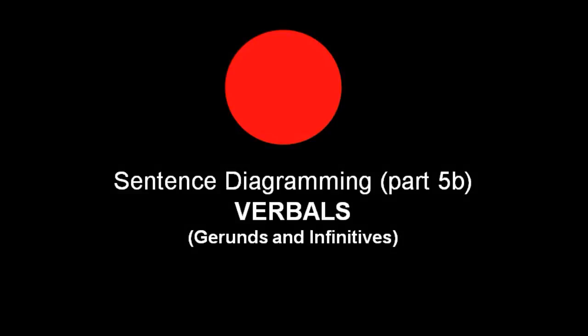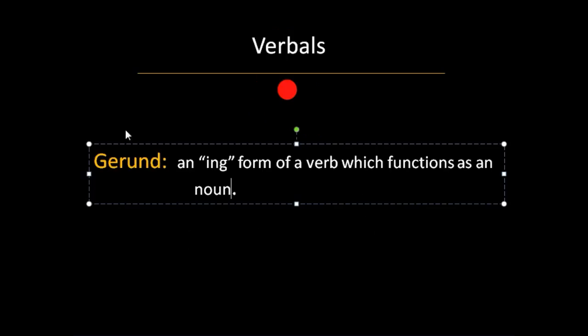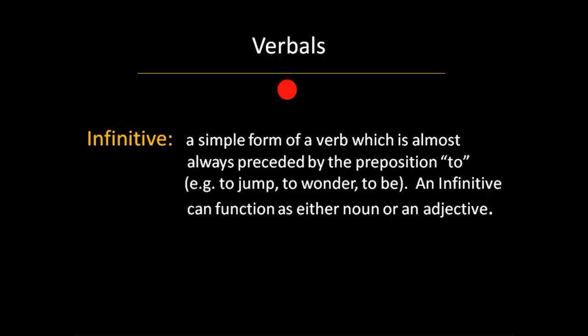In this second video on verbals, we're going to talk about the two remaining verbals: gerunds and infinitives. A gerund is an ing form of a verb which functions as a noun, while an infinitive is a simple form of a verb which is almost always preceded by the preposition to — to jump, to wonder, to be — and an infinitive can function either as a noun or as an adjective.